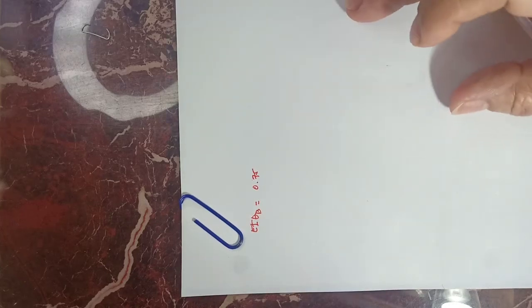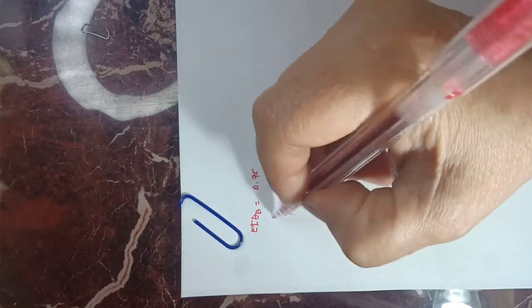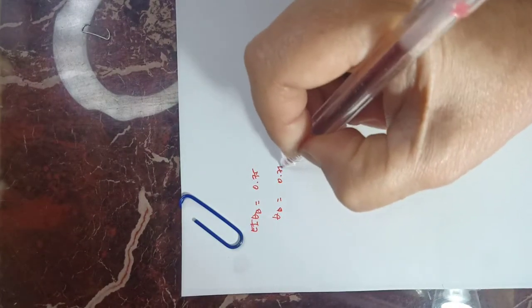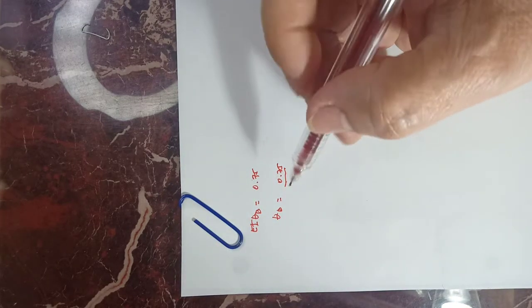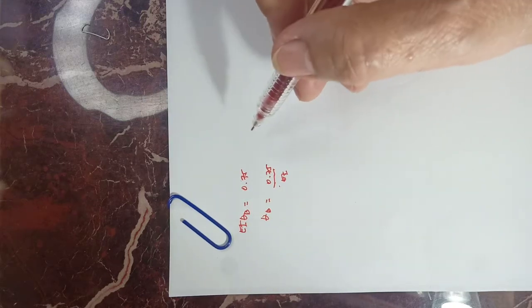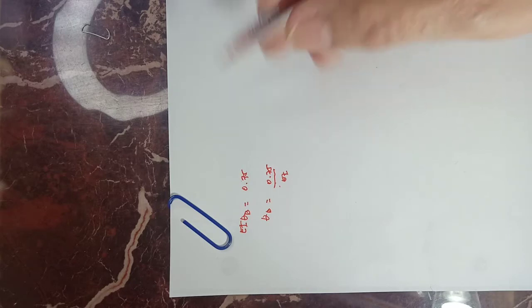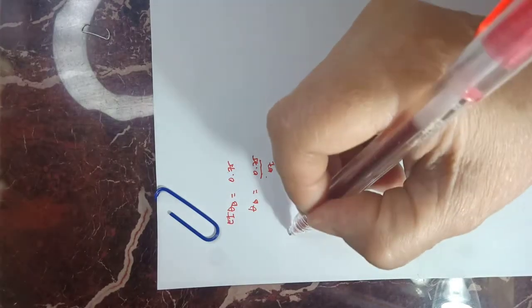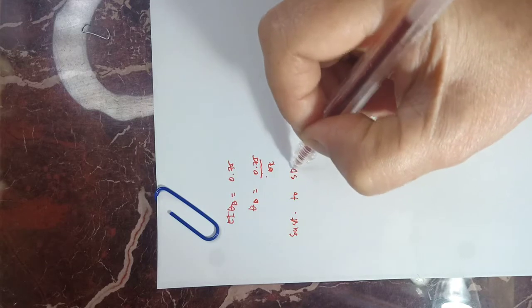We have EI·θ_b equal to 0.75, and solving for θ_b that would be equal to 0.75 over EI. So actually this is the slope at B. If E and I are given, we can determine the slope at B in radians. We substitute it back to the slope deflection equation.